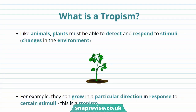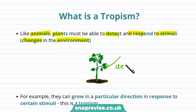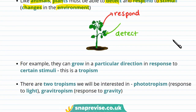Animals need to respond to the environment in order to survive. For example, if the environment changes and the temperature becomes too cold for the animal, the animal might start shivering to increase their body temperature. Like animals, plants must also be able to detect and respond to stimuli or changes in the environment. Plants can grow in a particular direction in response to certain stimuli, and this is called a tropism.